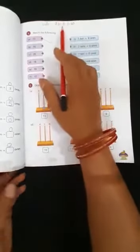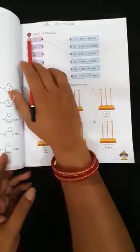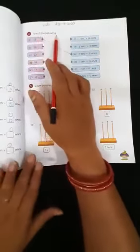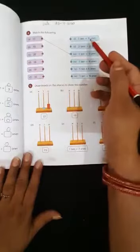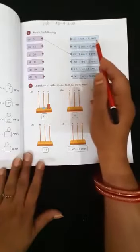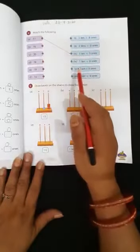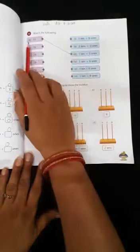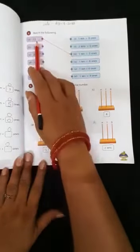So first you have to mention the date on the top. Number 4, match the following. Children, here some numbers are given and here how many tens and how many ones. So we will match the correct answer. A is already done for you. 13, in 13 how many tens and how many ones? 1 ten plus 3 ones.